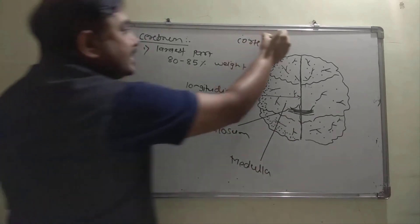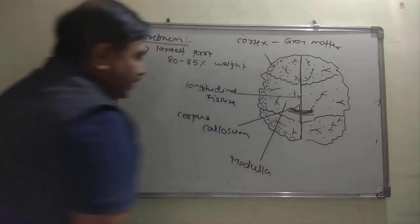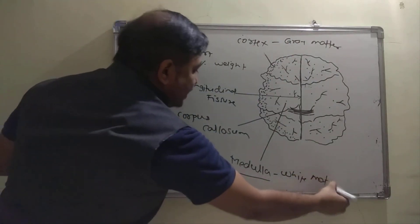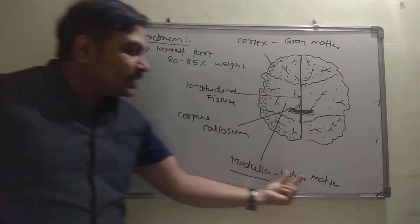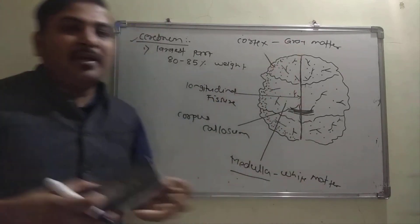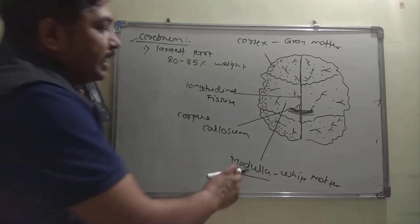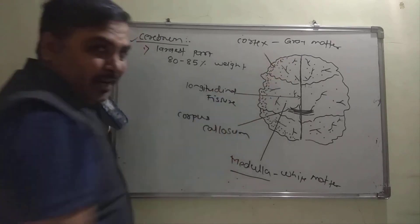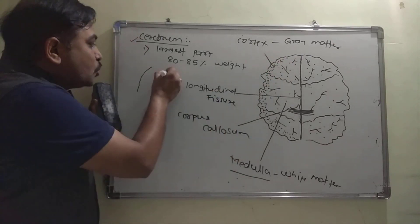The cerebral cortex is generally made up of grey matter, and the medulla is made up of white matter. When you observe this cortex, it is not smooth — it shows foldings.